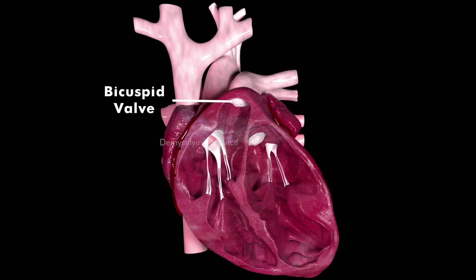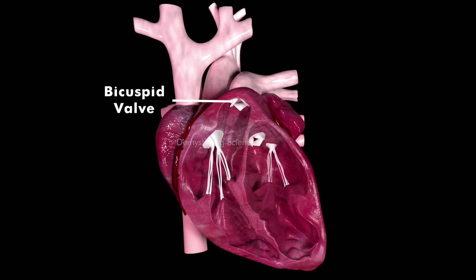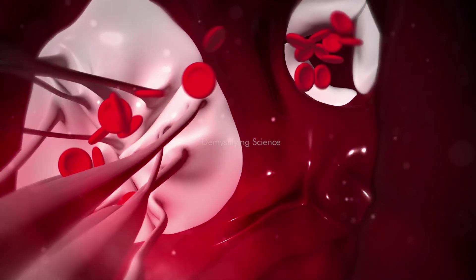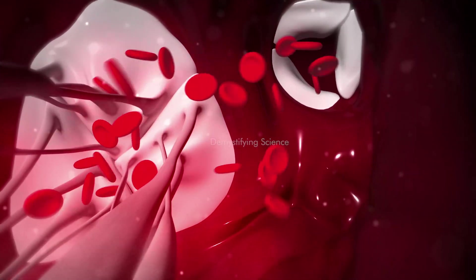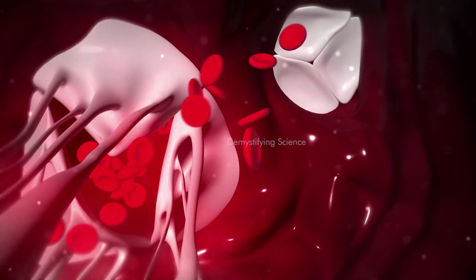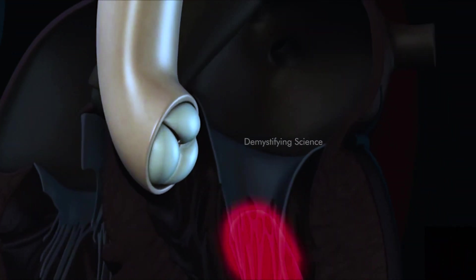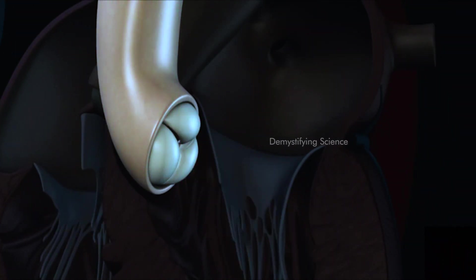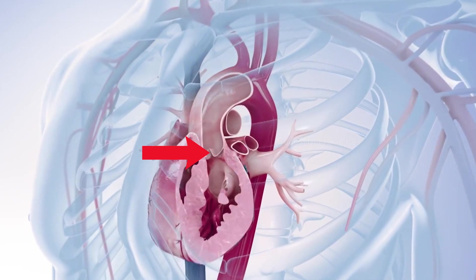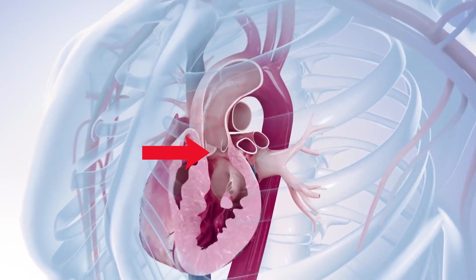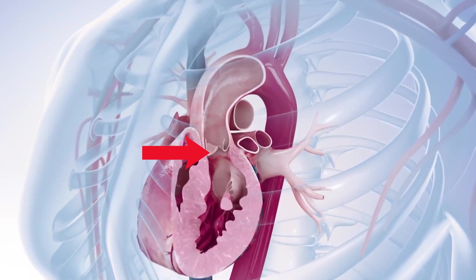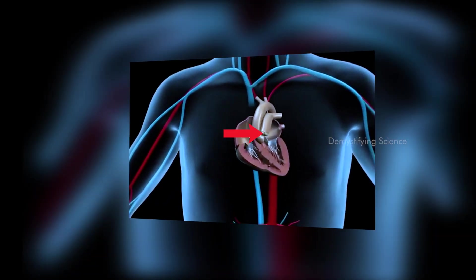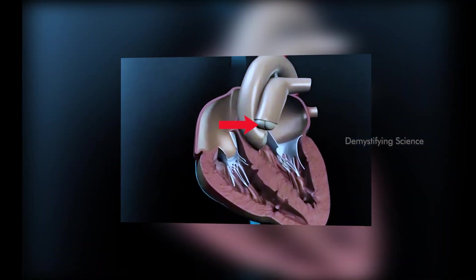The bicuspid valve is located between the left atrium and left ventricle, and likewise it opens due to a buildup of pressure in the left atrium. The semilunar valve stops the backflow of blood into the heart. There is a semilunar valve where the aorta leaves the left ventricle and another valve where the pulmonary artery leaves the right ventricle.